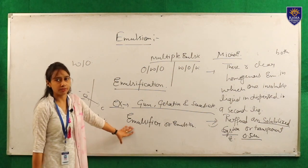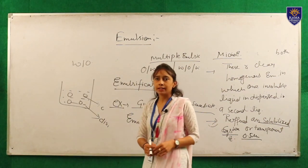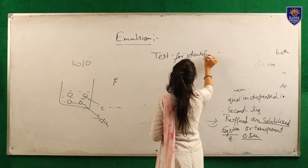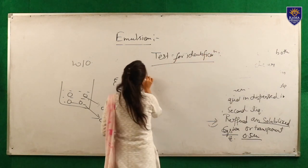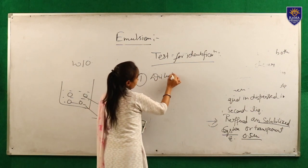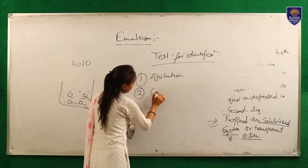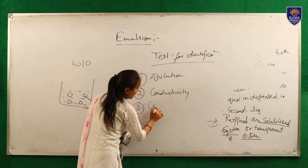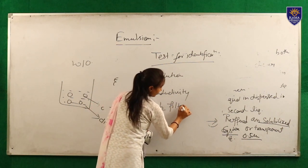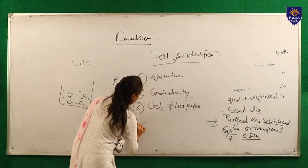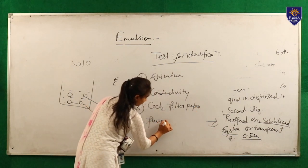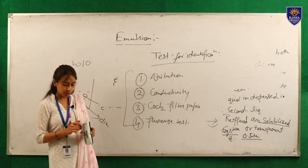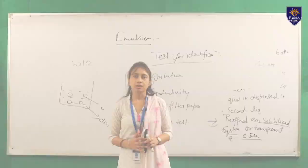Now the last topic: tests for identification of an emulsion. Number one is the emulsion test; number two is the conductivity test; number three is the cobalt chloride filter paper test; number four is the fluorescence test. These tests help identify which type of emulsion is being used. Thank you.